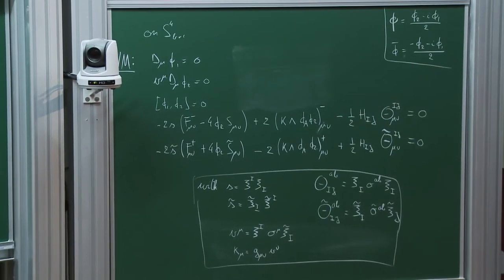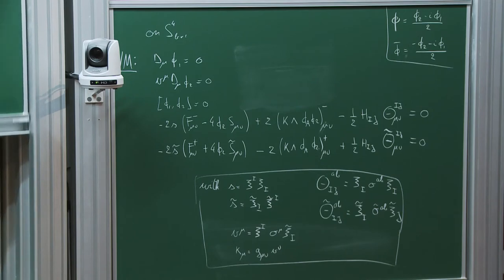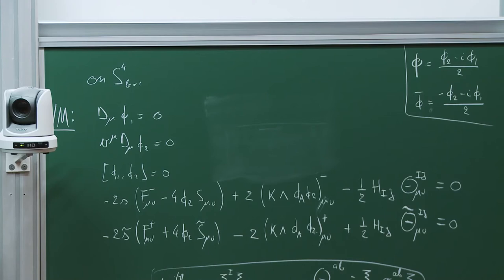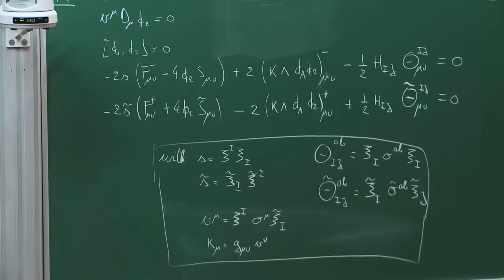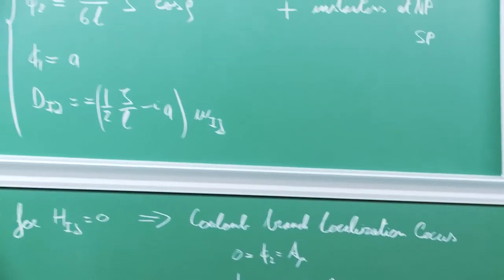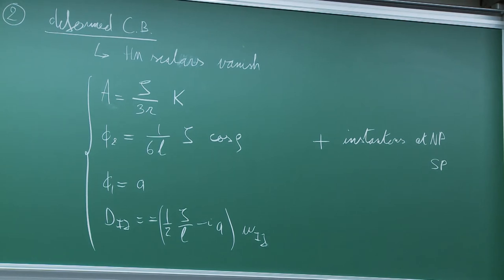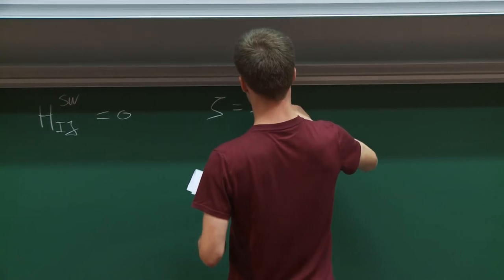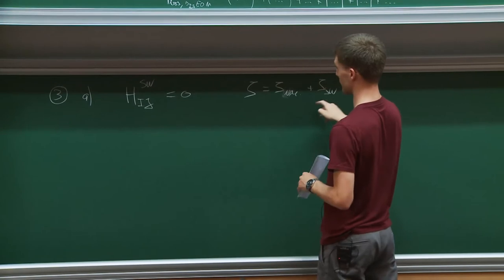But there are of course further solutions these equations allow. There are solutions where I do not impose that the hypermultiplet scalar fields vanish. In particular I can impose that H_ij^SW vanishes. To define this, I split zeta as a sum of zeta_vac plus zeta_SW, where zeta_vac and zeta_SW all have the same sign.